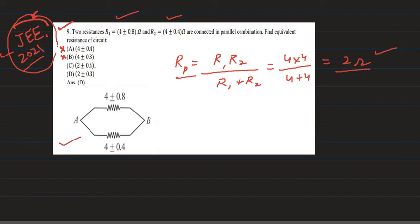Now we need to find out the absolute error. So we know that in parallel combination type, the relation used to calculate the error part is basically delta R upon Rp square is equal to delta R1 upon R1 square plus delta R2 upon R2 square.